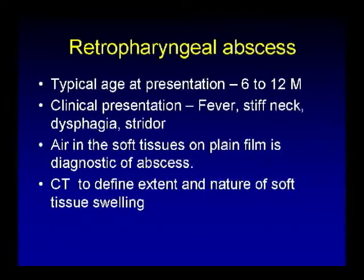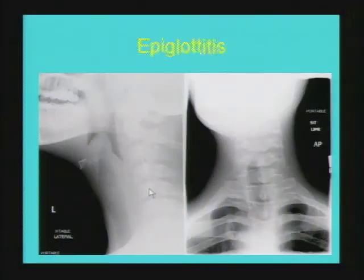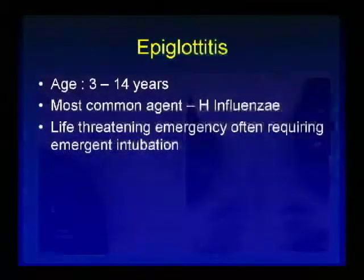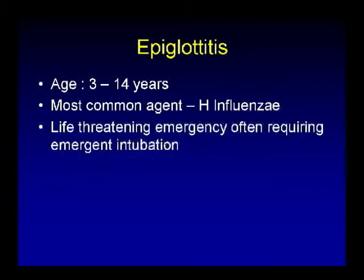Another severe upper airway condition is epiglottitis. On the lateral radiograph of the neck, you can see a bulbous enlargement of the epiglottis and thickening of the epiglottic fold. On the frontal radiograph, there is symmetric diffuse narrowing of the subglottic airway. Epiglottitis is a life-threatening emergency; however, it is not frequently seen because of immunization against H. influenzae. The common age group is 3 to 14 years.